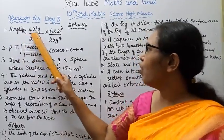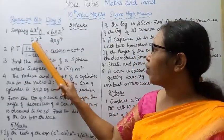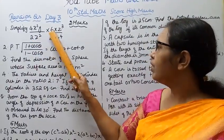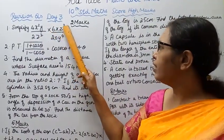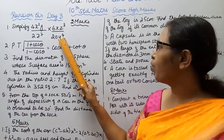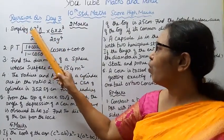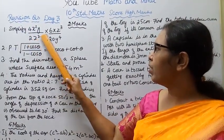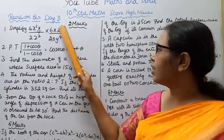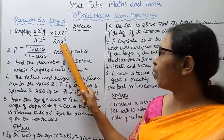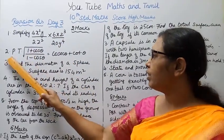First one, simplify: (4x²y) / (2z²) × (6xz³) / (20y⁴).